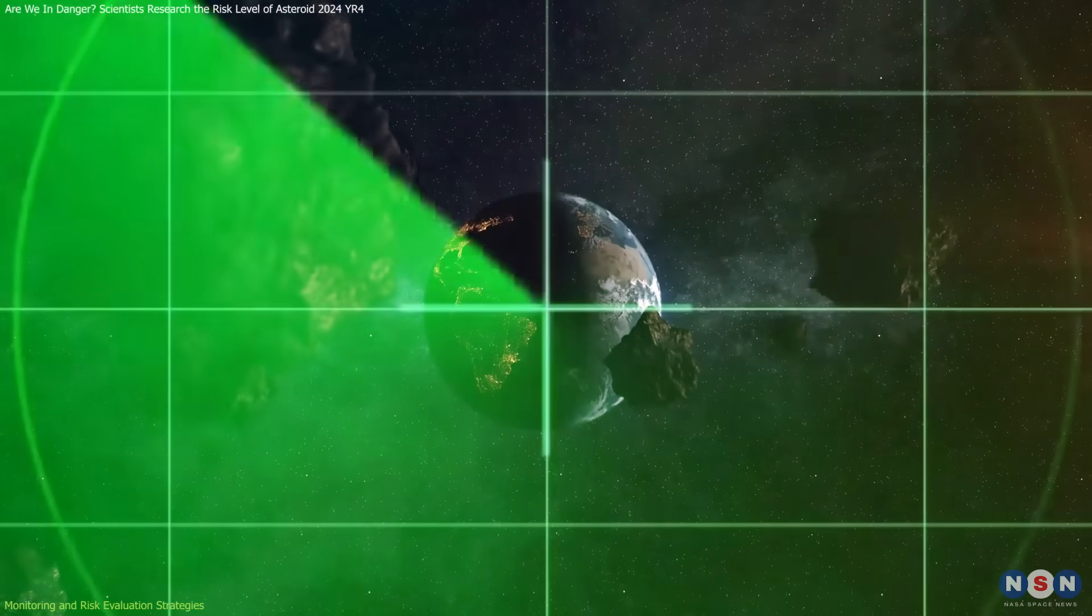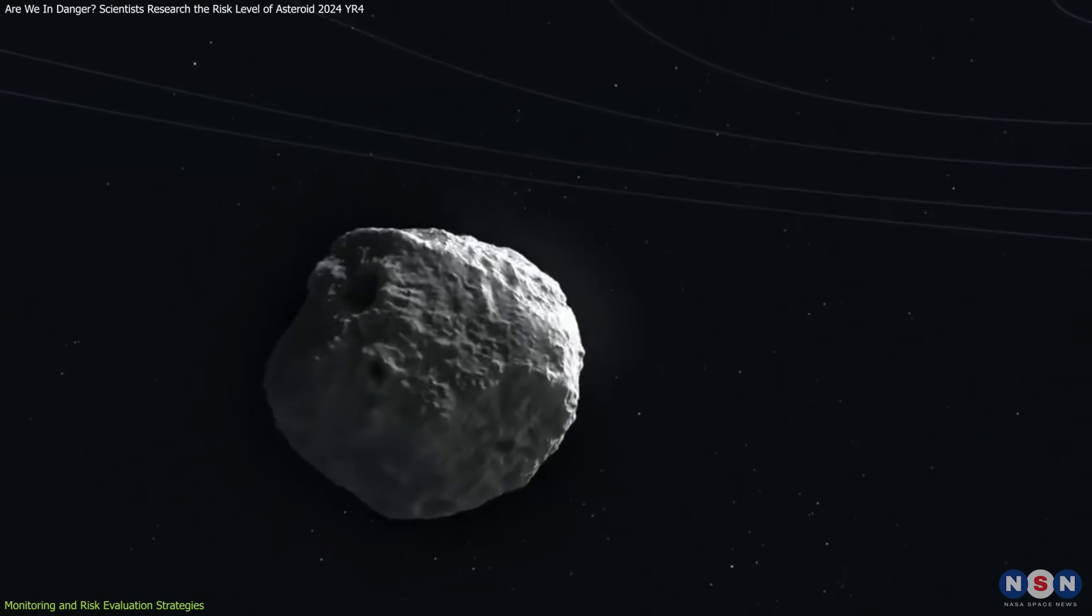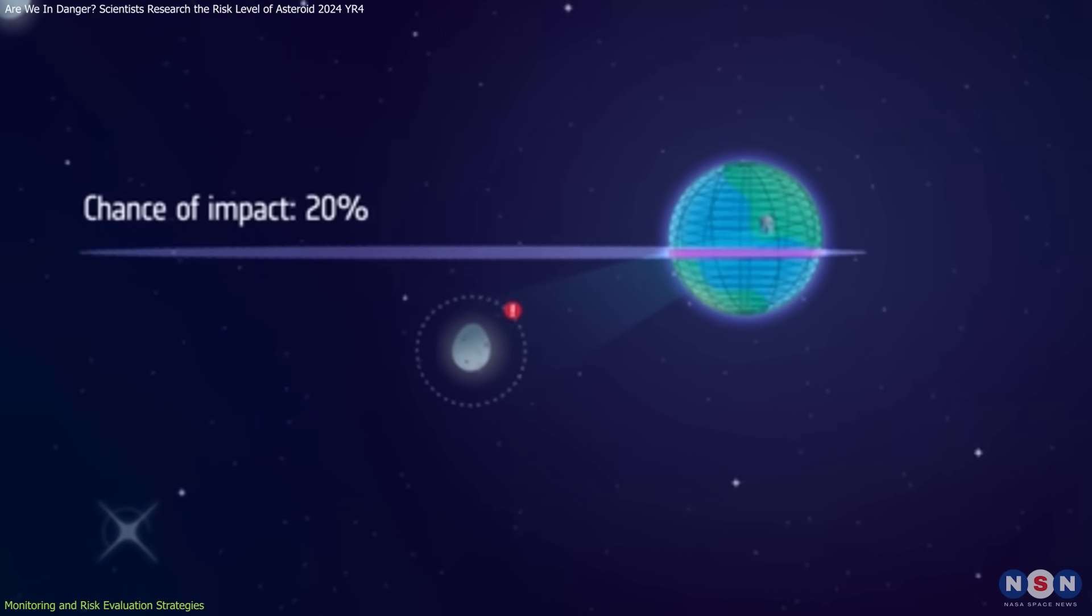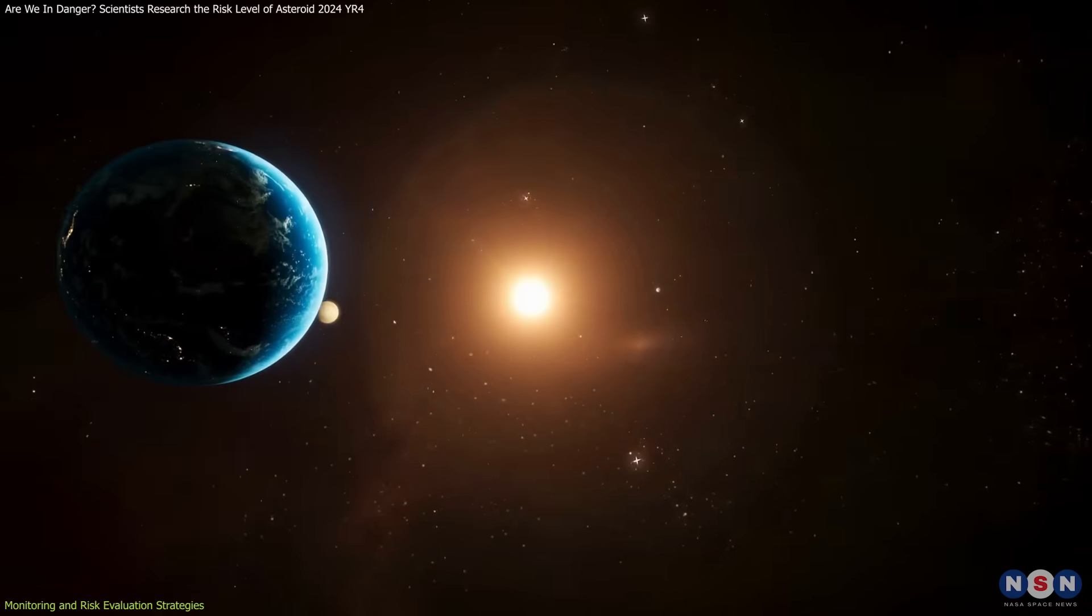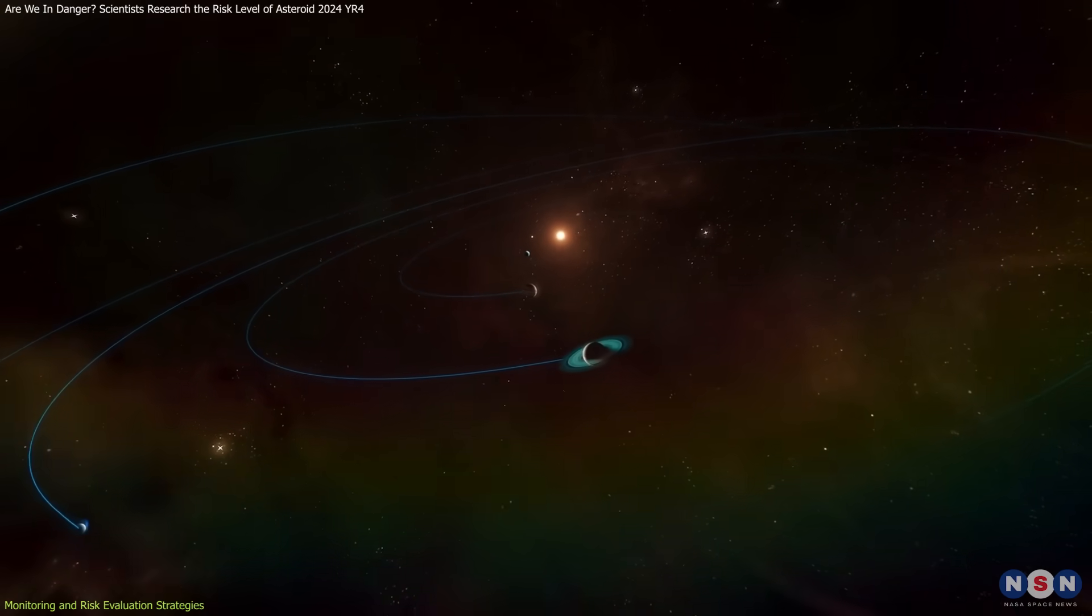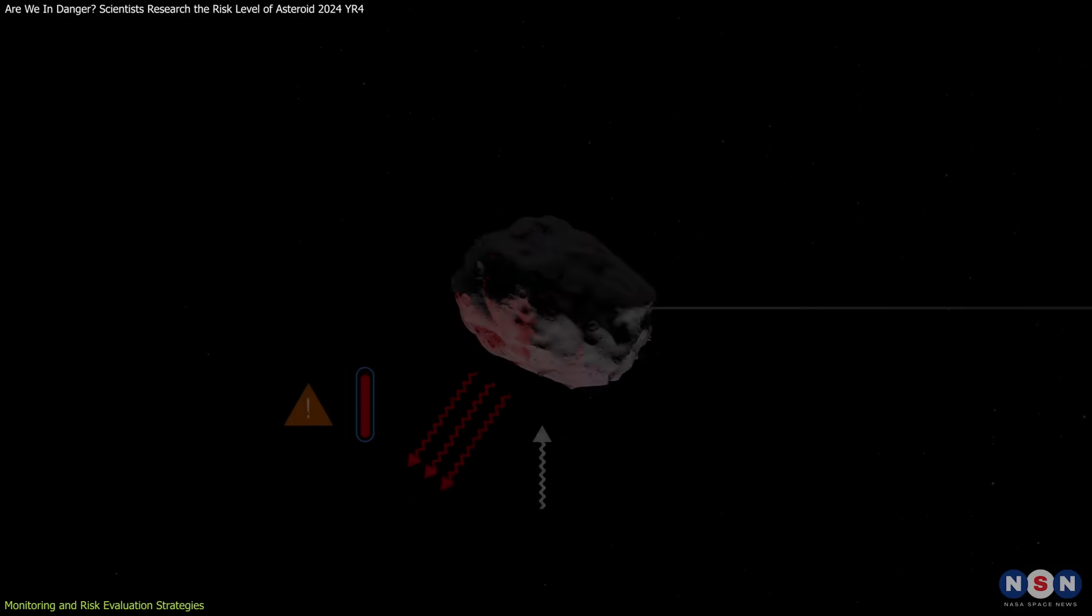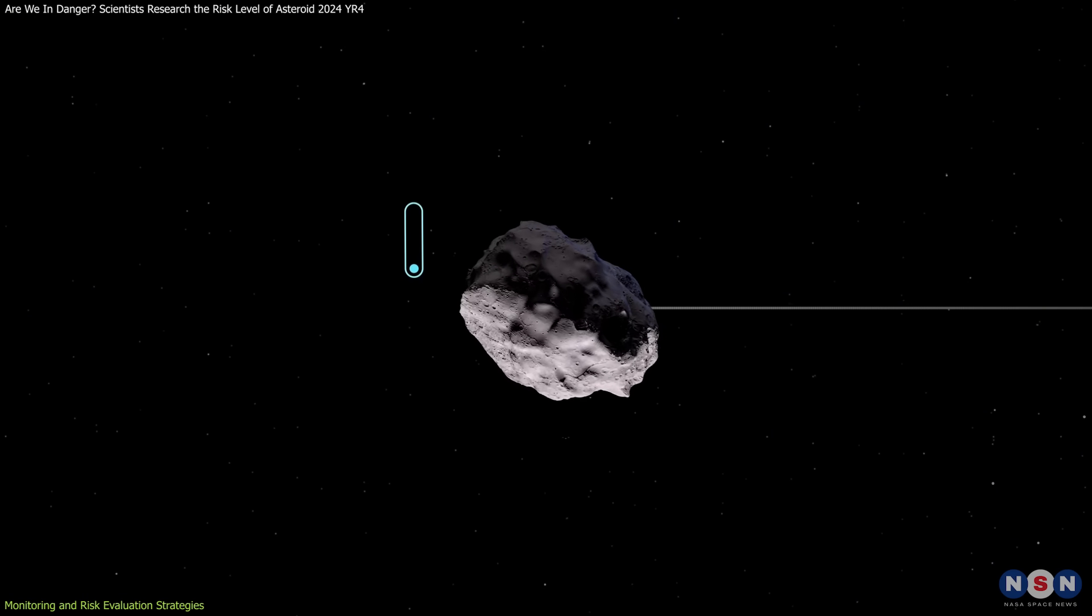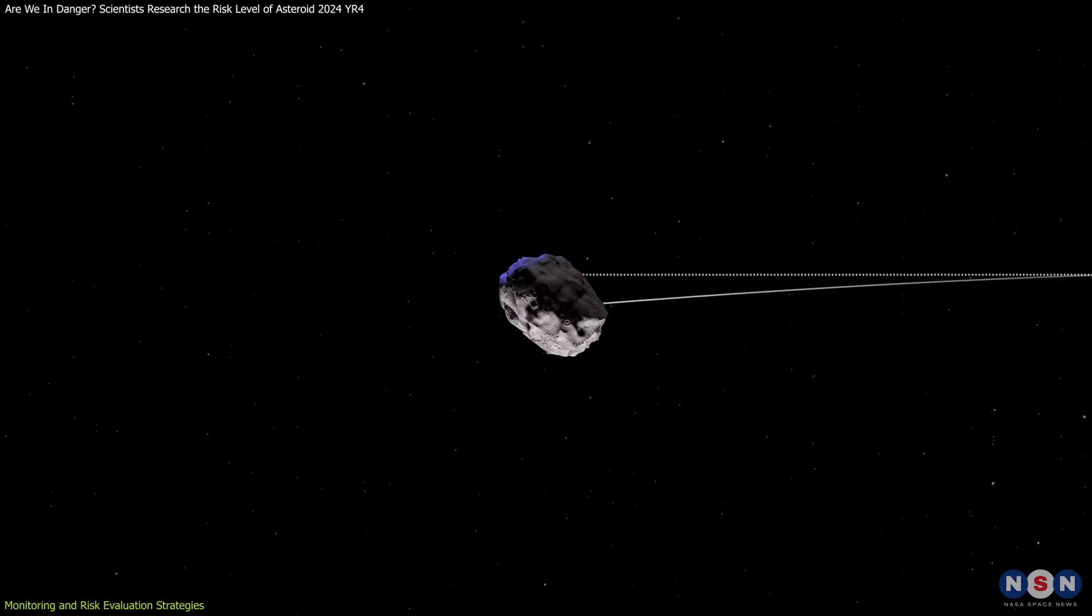These radar measurements serve as essential evidence in refining the models that predict how an asteroid's path might evolve over time. Computer simulations are another key component of modern risk evaluation. These simulations integrate observational data with models that account for gravitational forces from planets and the subtle effects of non-gravitational forces, such as the Yarkovsky effect. This effect, where an asteroid's orbit changes due to the way it absorbs sunlight and re-emits energy as heat, can significantly alter an object's trajectory over extended periods.